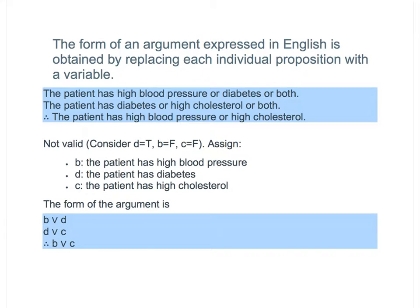Next, we define the form of an argument. The form of an argument expressed in English is obtained by replacing each individual proposition with a variable — that is, representing each sentence with a variable to find the form of that argument.